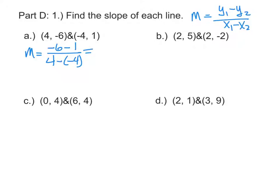Negative 6 minus 1 is negative 7, 4 minus negative 4 is 8. So there's the slope: negative 7/8.